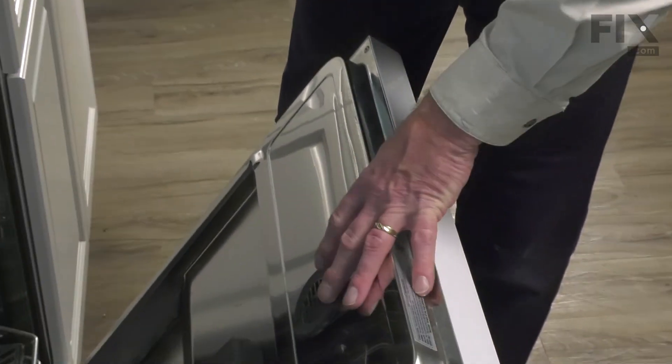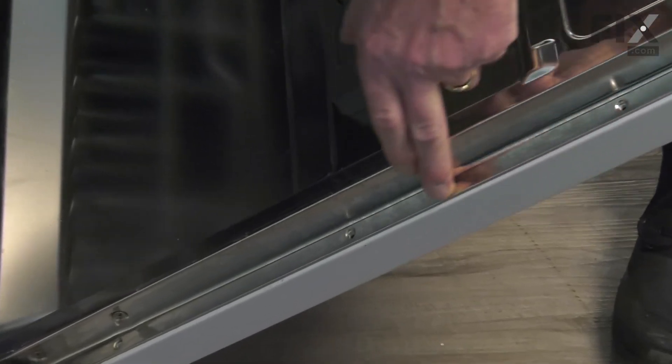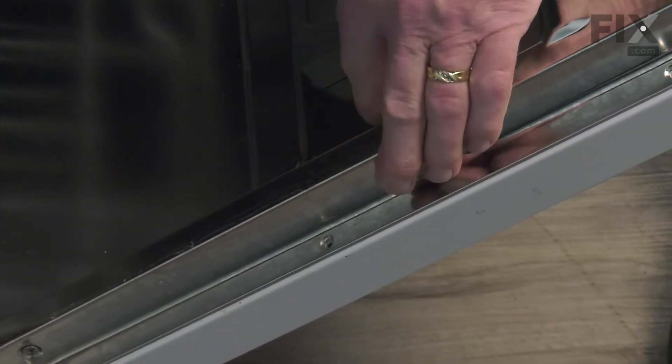We'll go ahead and put the shorter screws in that secure the front panel to the inner door panel. Make sure the edge of that panel lines up and that the inner door panel is tucked in behind it.